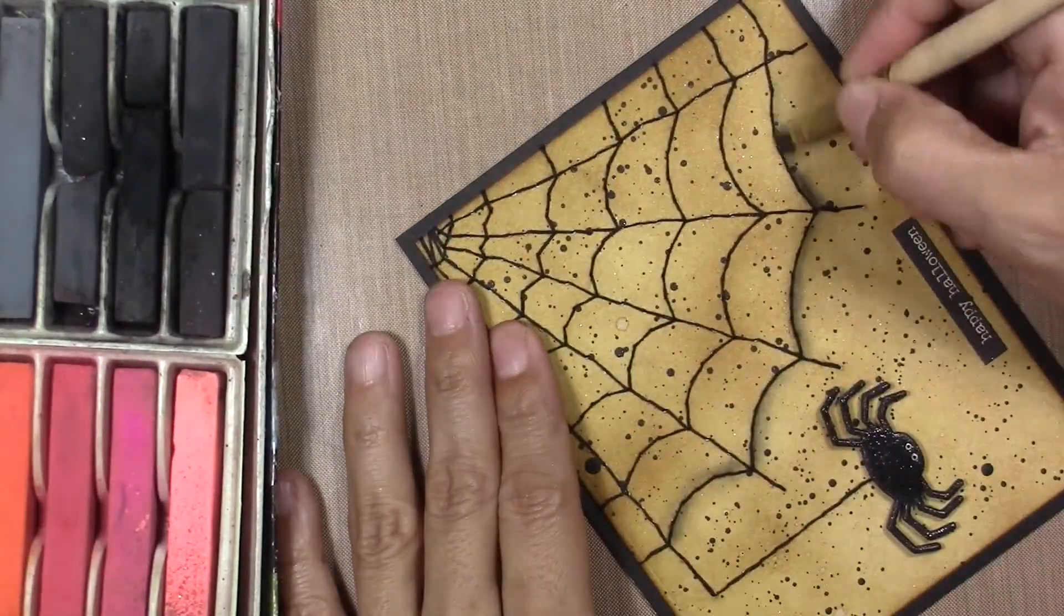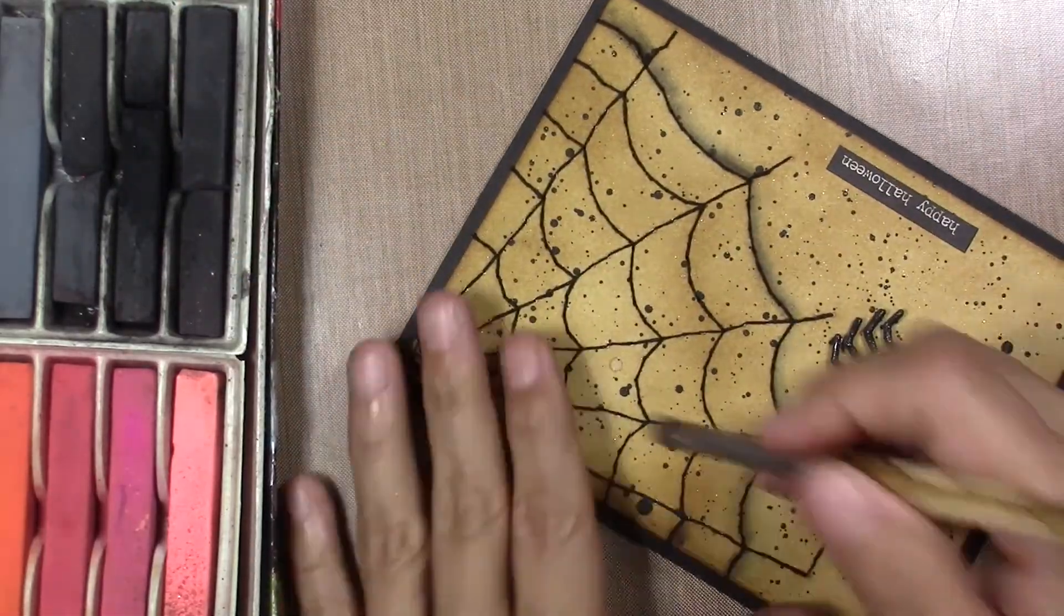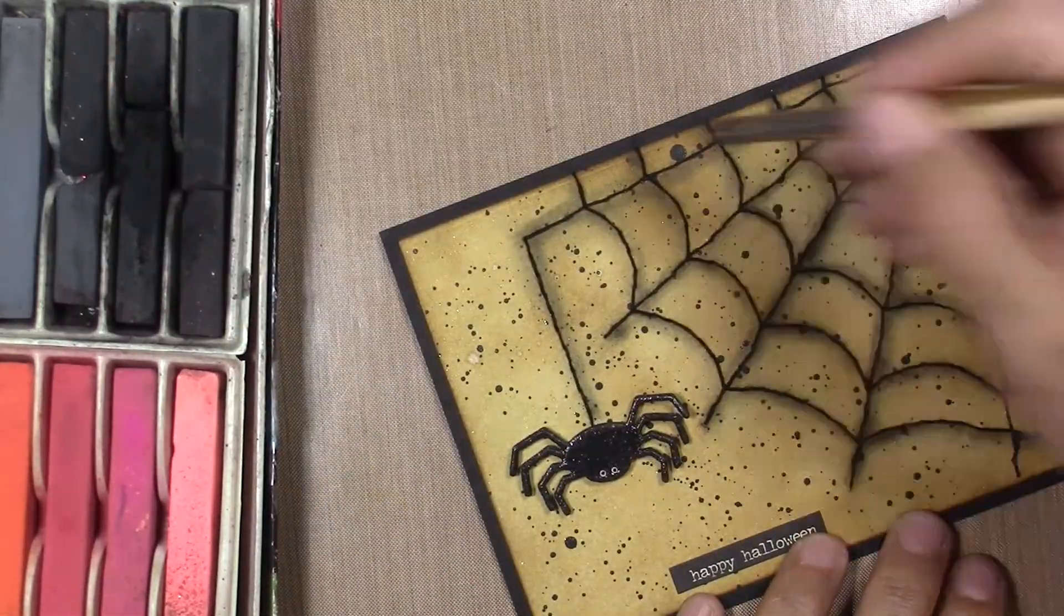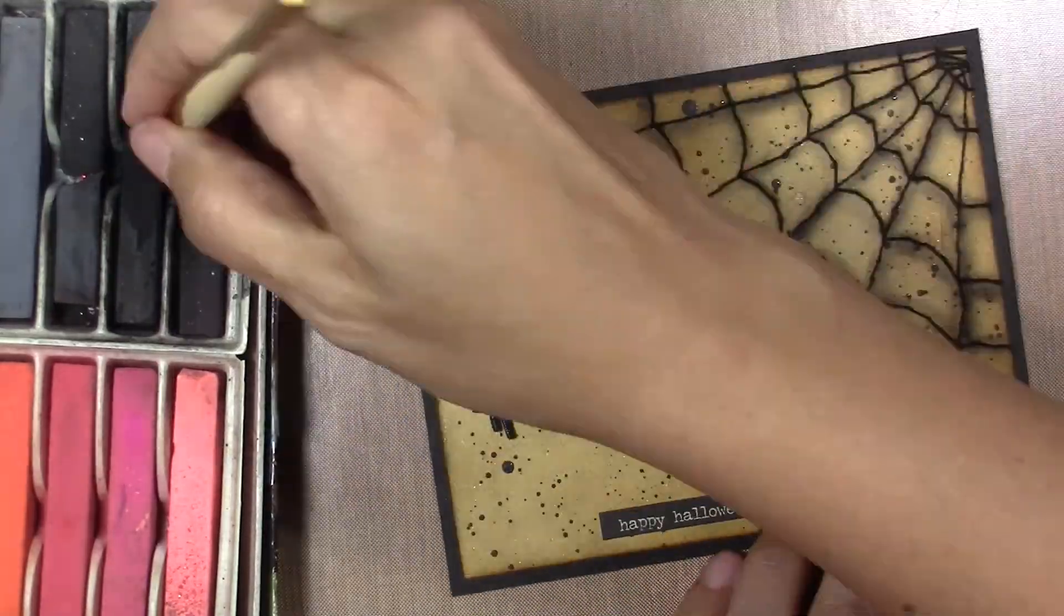I grabbed my pastel chalks and do like a shadow between the stitches. I don't know, to give it a little bit of something something.